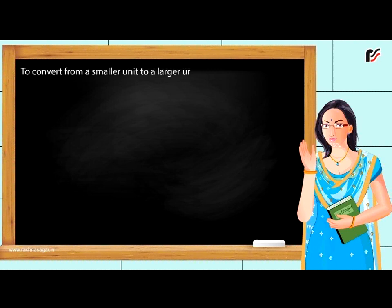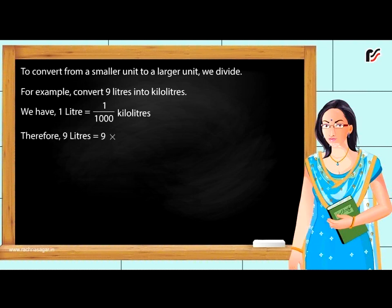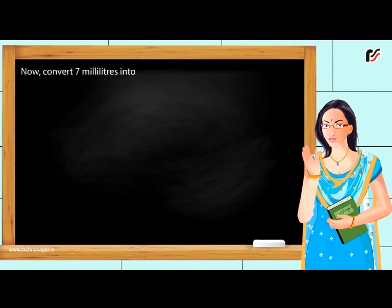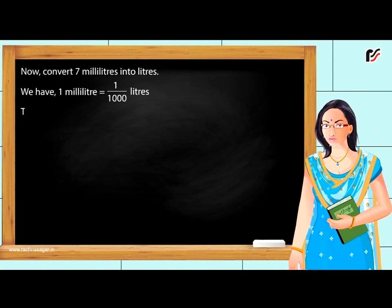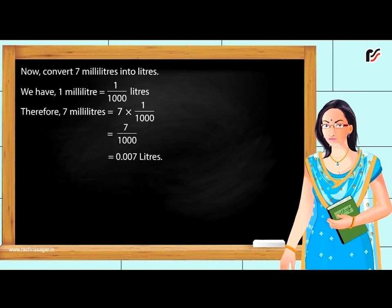To convert from a smaller unit to a larger unit, we divide. For example, convert nine litres into kilolitres. We have one litre is equal to one by one thousand kilolitres. Therefore, nine litres is equal to nine multiplied by one by one thousand, which equals nine by one thousand, equal to zero point zero zero nine kilolitres. Now, convert seven millilitres into litres. We have one millilitre is equal to one by one thousand litres. Therefore, seven millilitres equals seven by one thousand, equal to zero point zero zero seven litres.